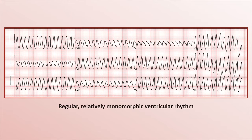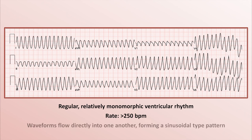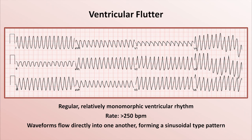The very last EKG is this dramatic rhythm. It's a regular, relatively monomorphic rhythm with an extremely fast rate greater than 250. The waveforms flow directly into one another with no isoelectric point in any lead, forming a sinusoidal pattern in which it becomes impossible to distinguish QRS from T. Sometimes this is described as the EKG looking the same upside down. This is called ventricular flutter — it's almost always pulseless and usually will quickly degenerate into ventricular fibrillation. That concludes this video on ventricular tachycardia. Please consider subscribing to Strong Medicine to check out the entire series on EKG interpretation, as well as a large collection of videos on other medical topics.